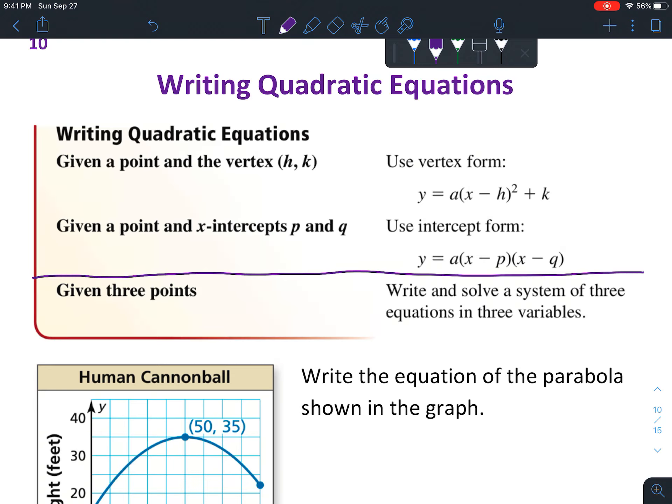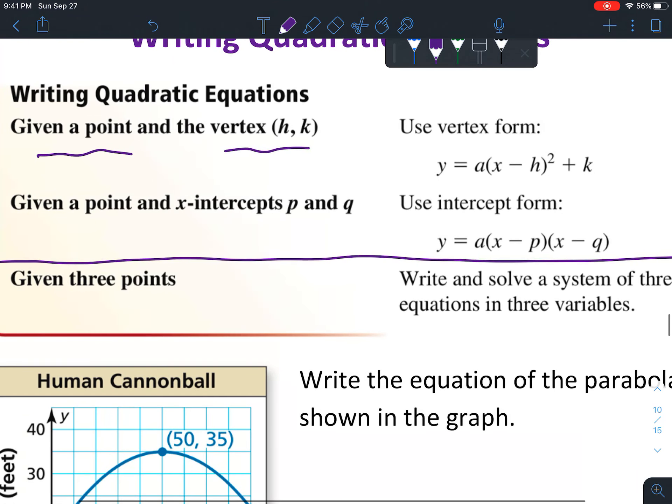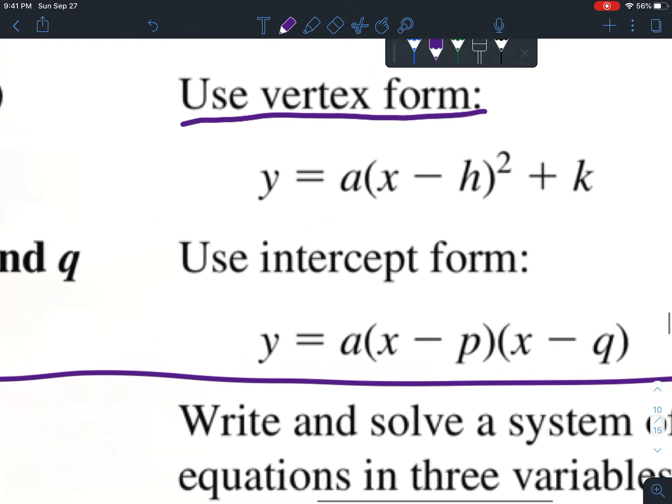When you have to write a quadratic equation given certain pieces, there's different ways to do it depending on which pieces you're given. If you're given a point and the vertex of the quadratic equation, you'll be able to find that using vertex form.